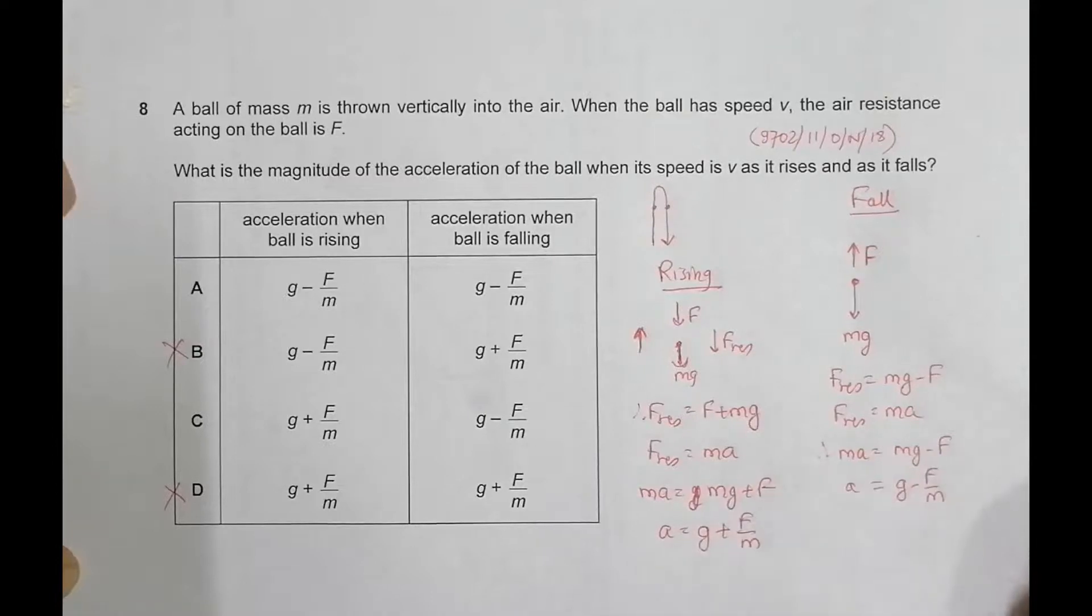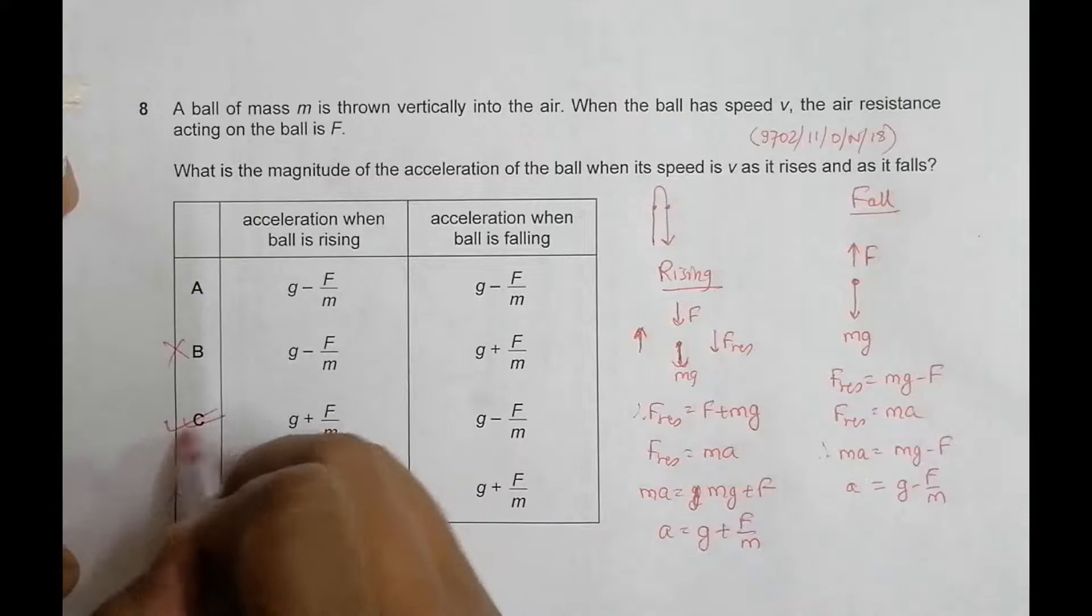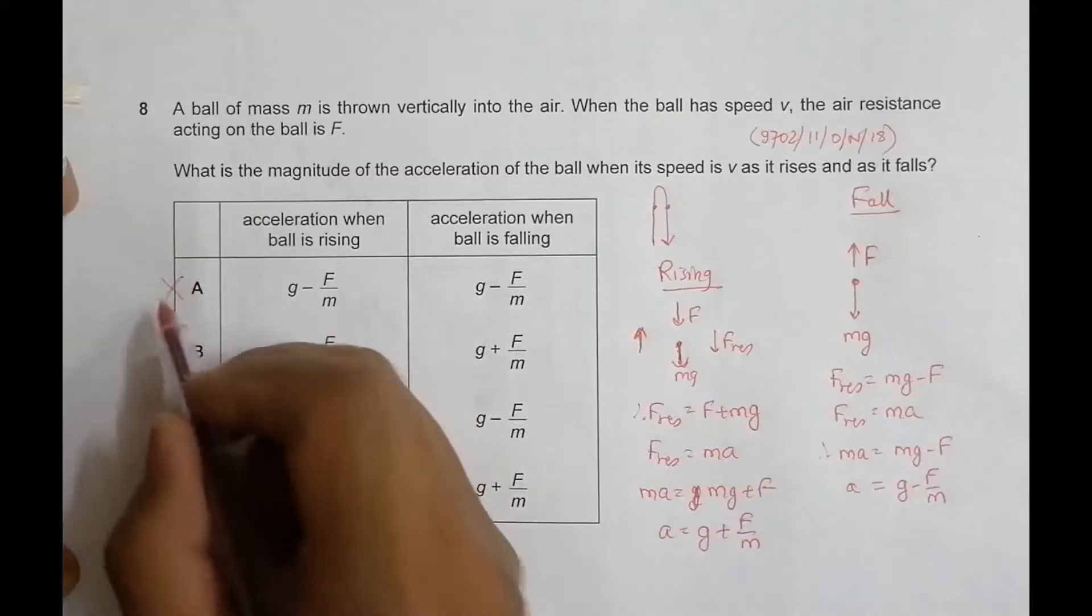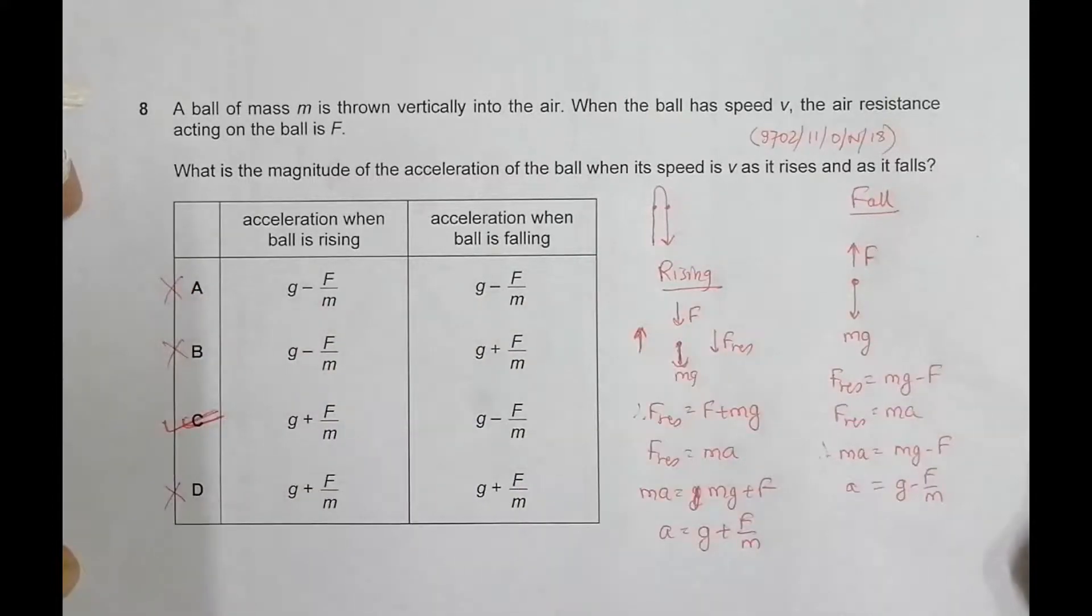Which gives us a is equal to, when I divide it, g plus F by M. So the answer becomes choice number C should be the correct answer and A disqualifies.